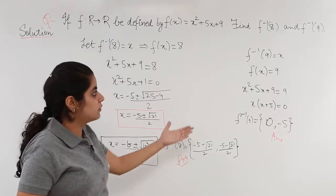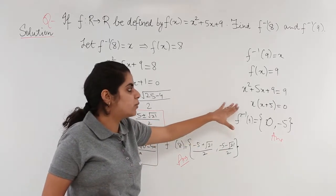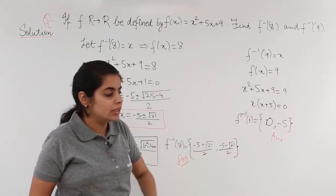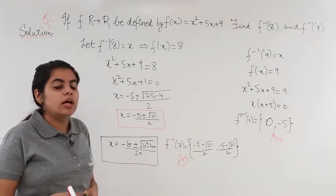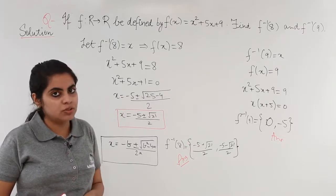Similarly what we did was f⁻¹(9), f(x) equals 9. Solve it using the quadratic formula or you can solve it using the splitting of middle term or taking common as x and then you get the answer. So this was the video in which we saw the second illustration based on the inverse of functions.